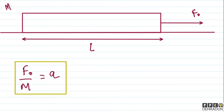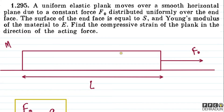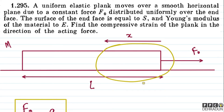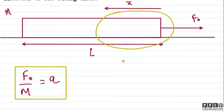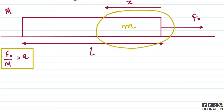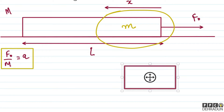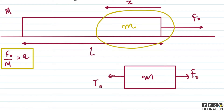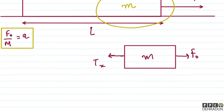Now let's consider a small segment of the plank at a distance x from the end point. If we talk about this portion of the rod, the mass of the segment of length x will be M upon L times x. Now if we draw a separate free body diagram for this segment, on the right side force F0 is acting, and on the left side tension T(x) is acting.